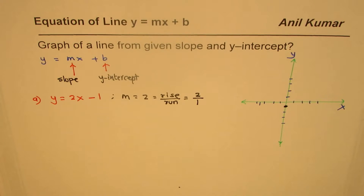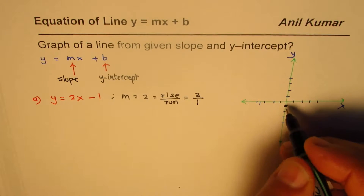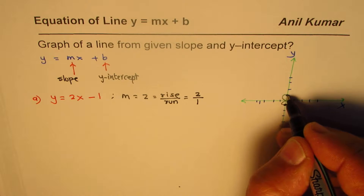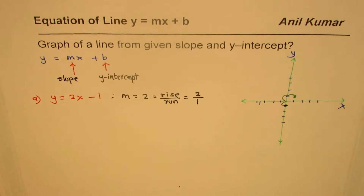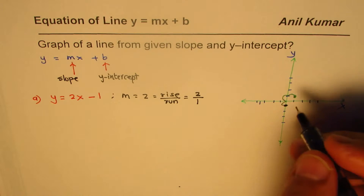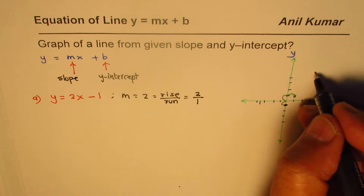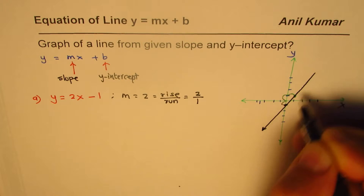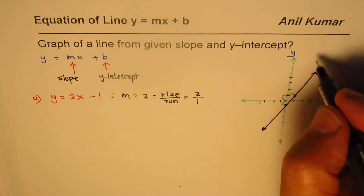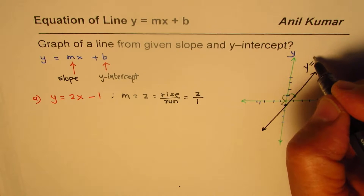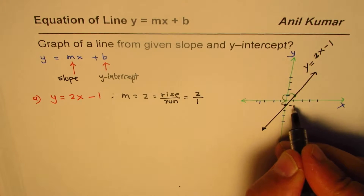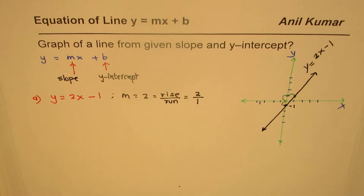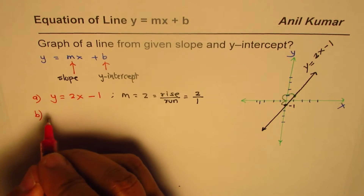From the y-intercept at -1, we go 2 units up and 1 unit to the right — that gives us a second point. Joining these two points we can draw a line. That line represents the equation y = 2x - 1. So this is that simple.